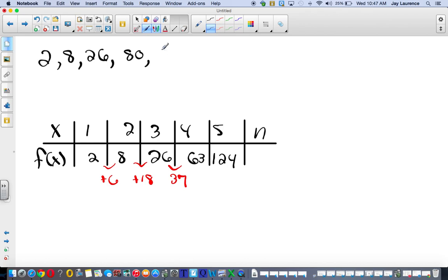This is supposed to be 80, and this is supposed to be 242. So let me change those. 80 and 242. And so now the difference here is 54. And the difference here is going to be 162, I think. And what I notice is that 6 times 3 is 18, 18 times 3 is 54, and 54 times 3 is 162. This is exponential. It's an exponential function.